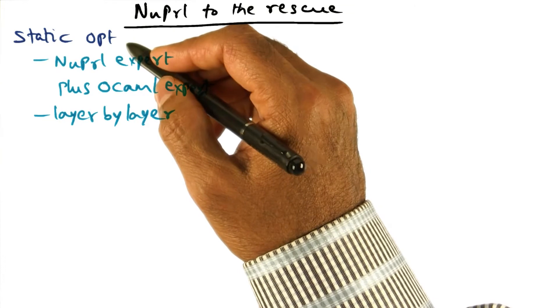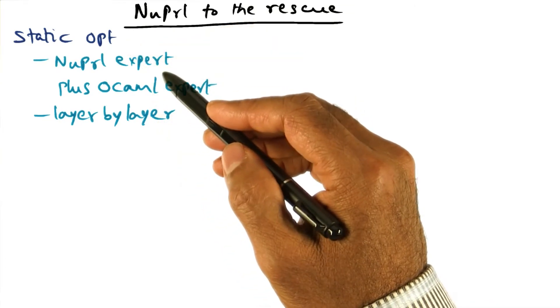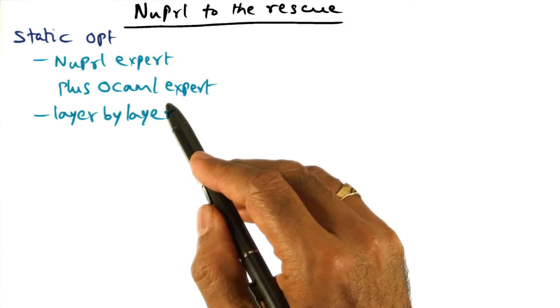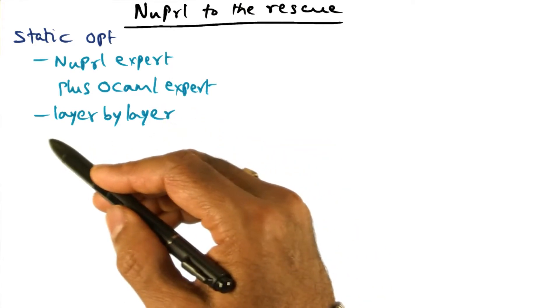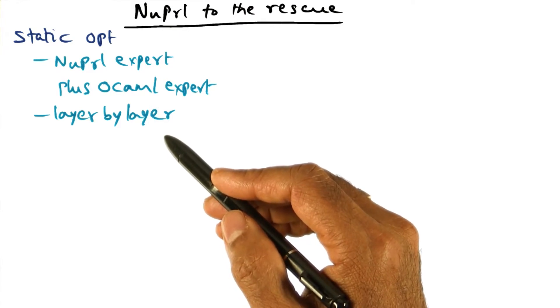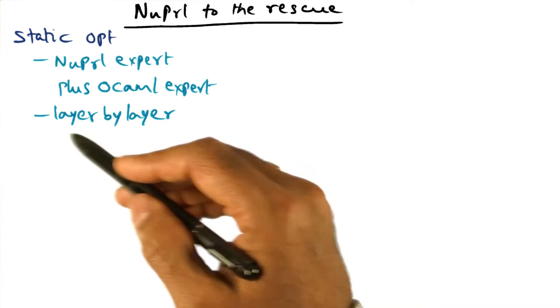The first step is what is called static optimization. And this requires that a NewPearl expert and the OCaml expert sit together and in a semi-automatic manner, they go layer by layer in the protocol stack and identify what transformation code can be applied in order to optimize each of the layers.